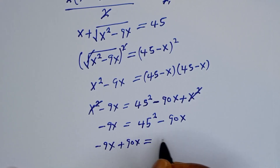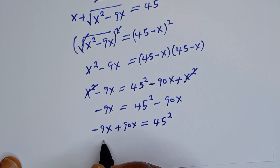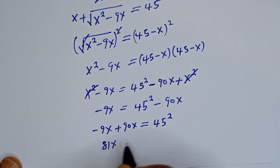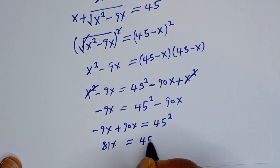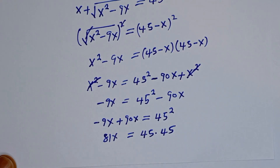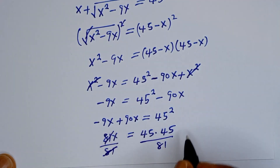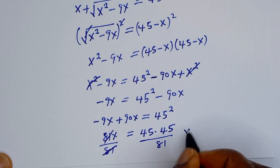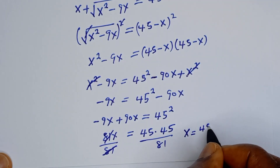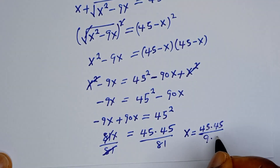Rearranging: minus 9s plus 90s gives 81s, equal to 45 squared. Let's divide both sides by 81.